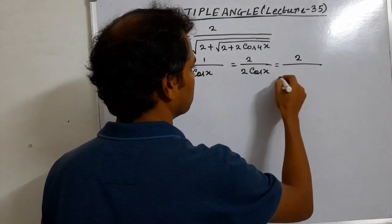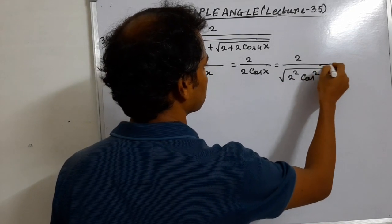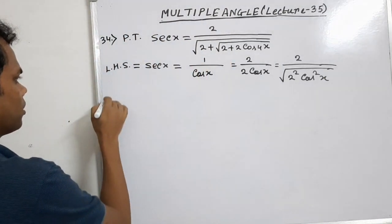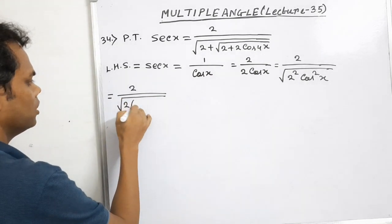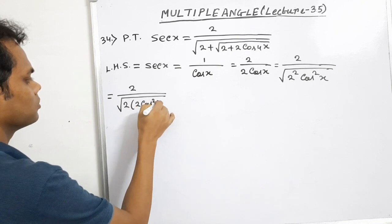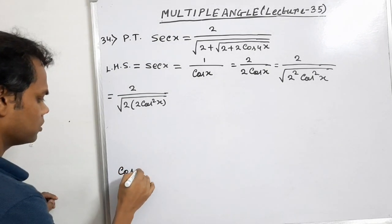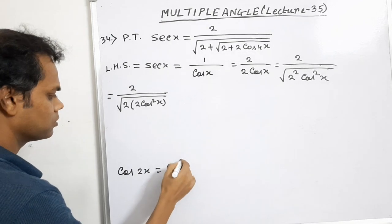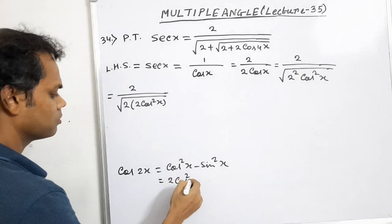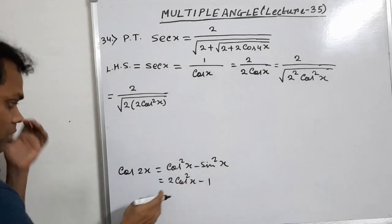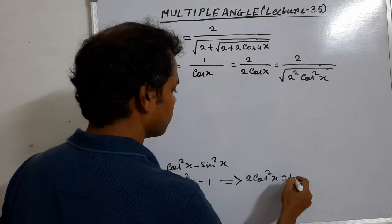Then we get 2 by the square root of 2 cos squared x, which becomes 2 by the square root of 2 into 2 cos squared x. Now, the formula for cos 2x is cos squared x minus sin squared x, or equivalently 2 cos squared x minus 1. From this formula, we can find that 2 cos squared x equals 1 plus cos 2x.